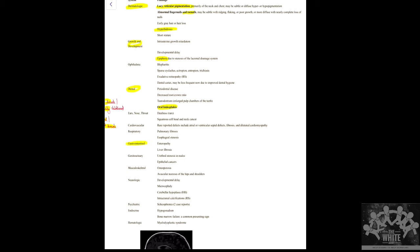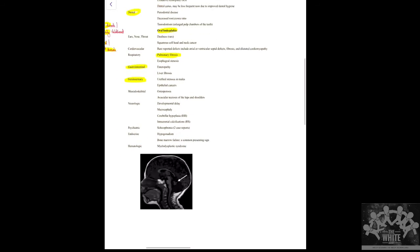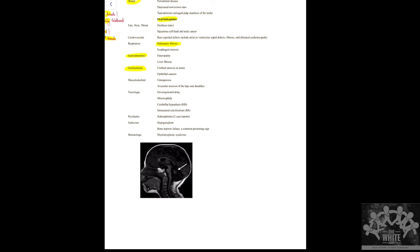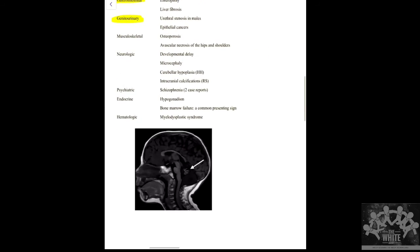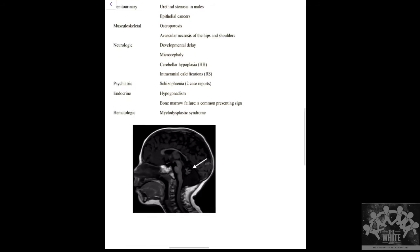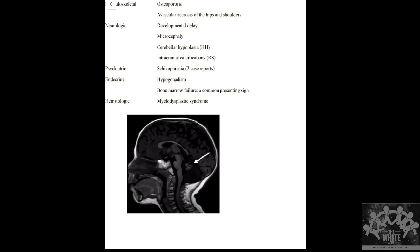Other system involvement includes CVS, GIT bleeding, genitourinary abnormality, and the respiratory system can develop pulmonary fibrosis due to progressive telomere shortening. Neurologically, there can be growth delay and cerebellar hypoplasia.